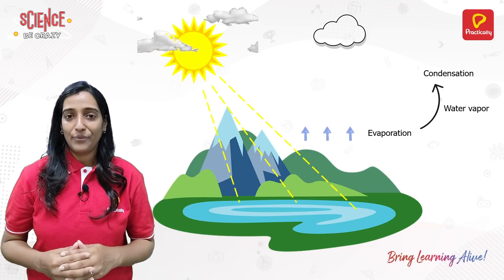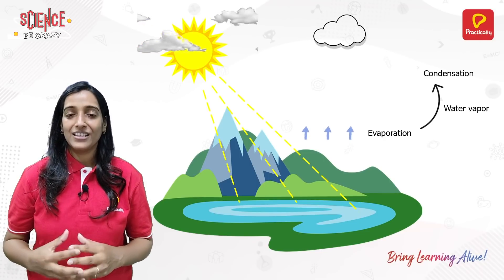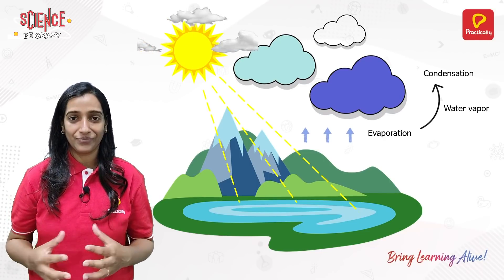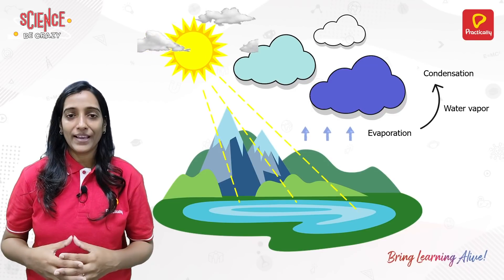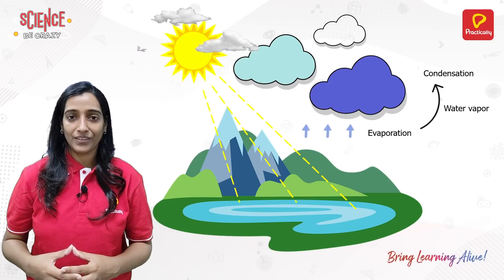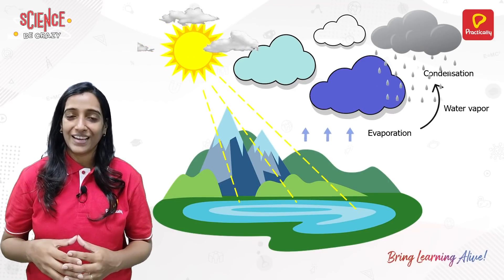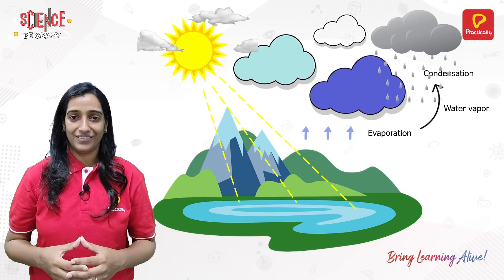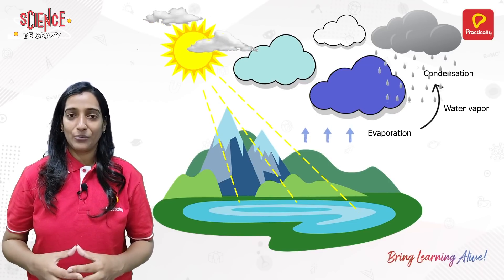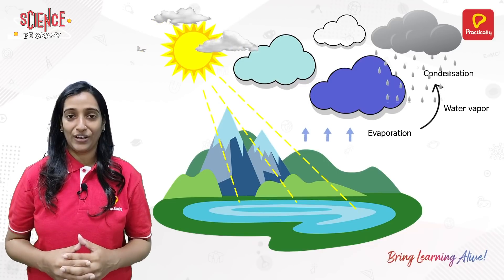Now, what will happen if these water droplets start to accumulate in the cloud? Well, the clouds will start to become heavier and heavier. At one point, the clouds won't be able to hold all the water that is forming in them. Then what will happen? Well, it will start to rain — it will start to pour down. That is nothing but the formation of rain, and this is nothing but the whole water cycle that you have seen now.